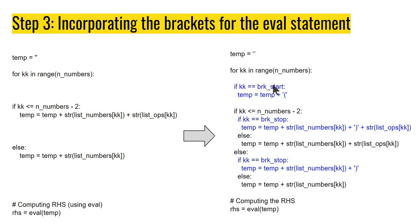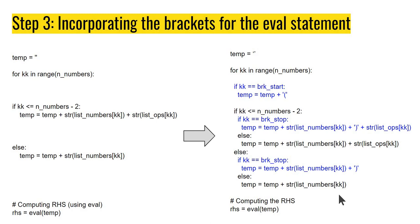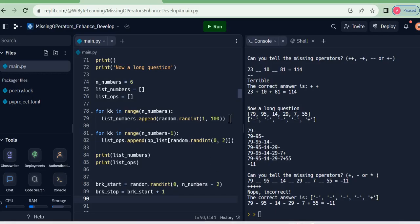kk counts through the numbers. If kk is equal to brk_start, that's the point where I need to start a bracket — so before doing anything else, I introduce an opening bracket. Next, as I go through these lists, I just have to figure out: do I have to close this bracket or not? If not, nothing changes — it's just like earlier. But if I do have to close this bracket, I go and close the bracket first before I put the next operator, because the bracket must close immediately after the number.